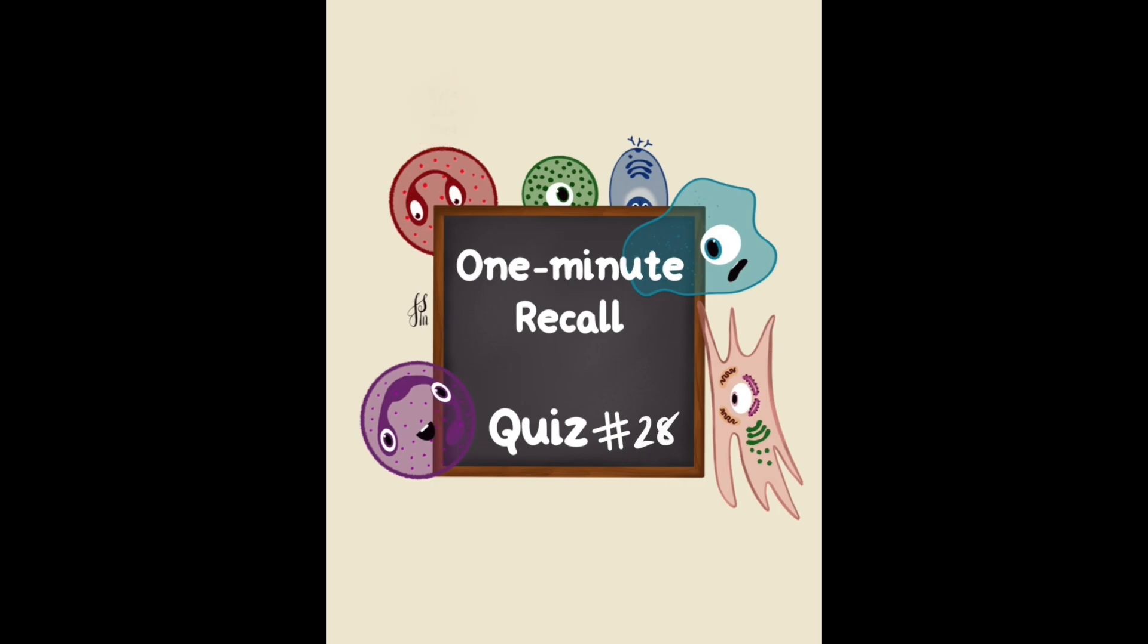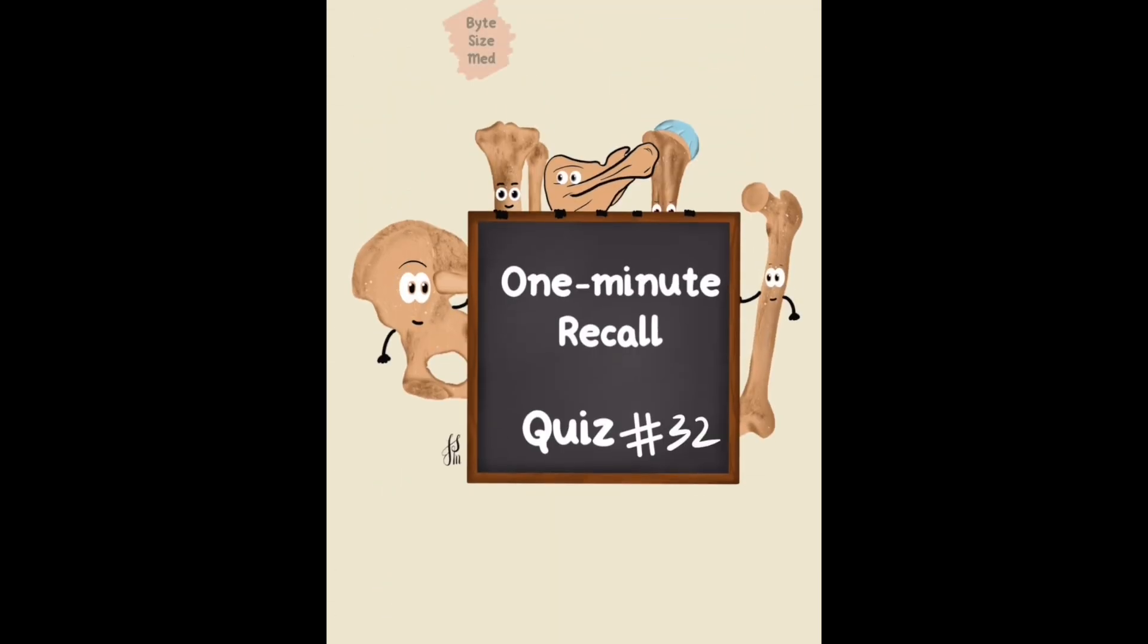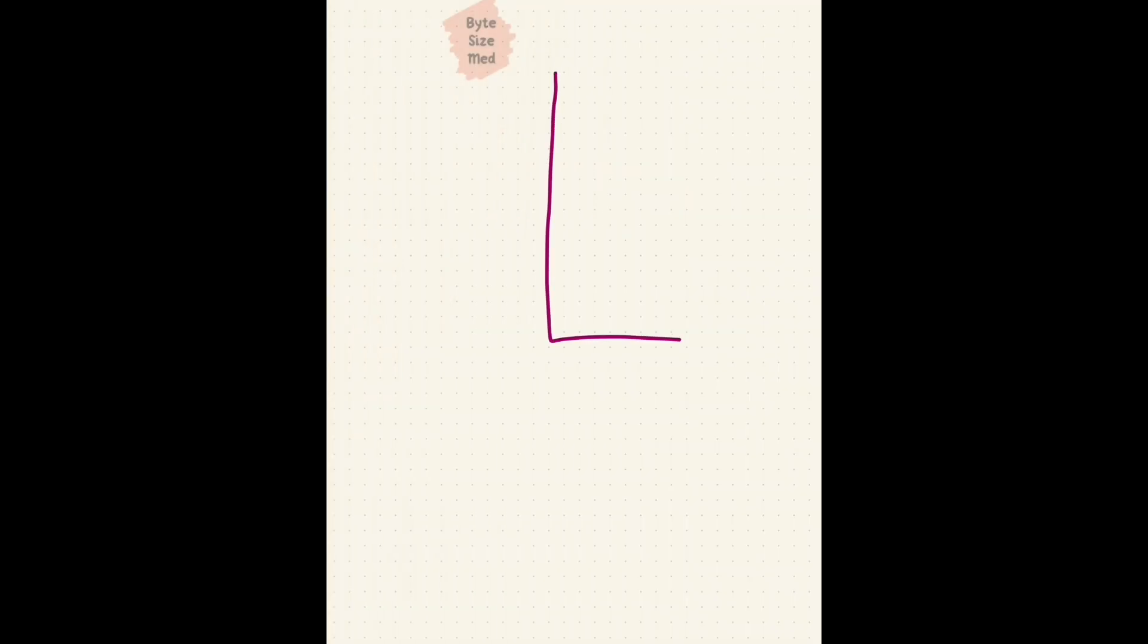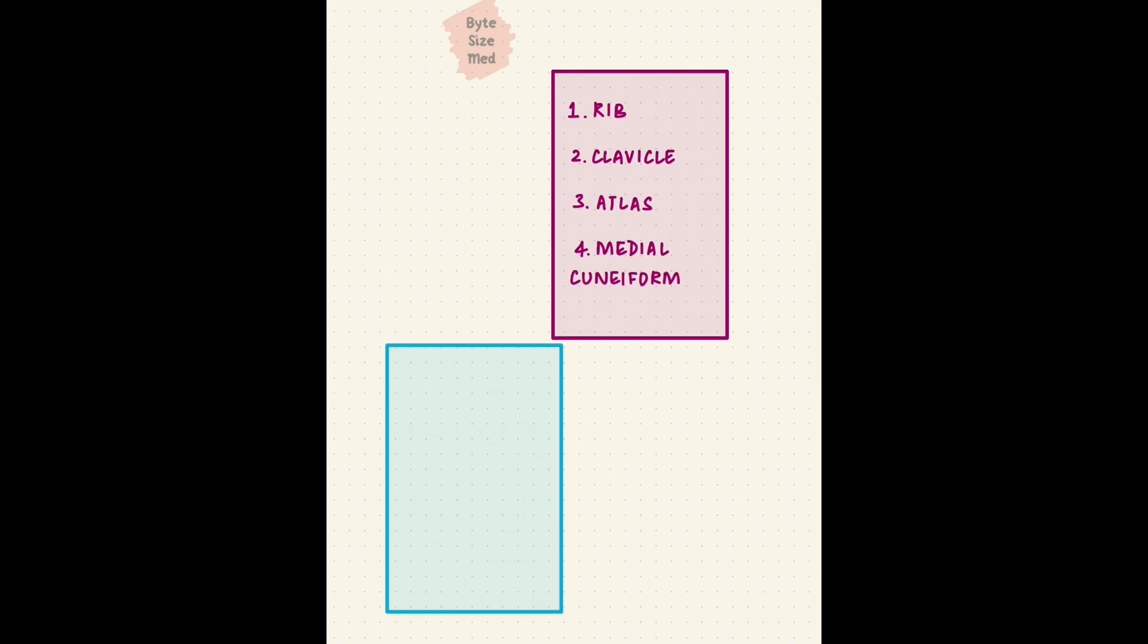Now we'll bring back some of those different types of bones again. You've got to match an example with the type of bone it belongs to. We've got the rib, the clavicle, atlas, and the medial cuneiform. Are these bones flat, irregular, short, or long bones? Pause the video here. Your task is to match the bone to its type.